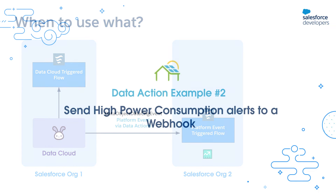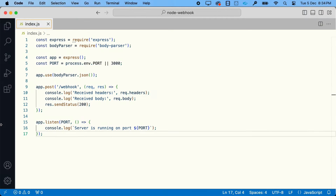That brings us to the next segment of this video where we'll create a data action that sends events to a webhook. A webhook is nothing but an API endpoint which, when invoked, runs its own business logic. I've set up a simple API endpoint using Node.js that just logs whatever data and headers it receives.